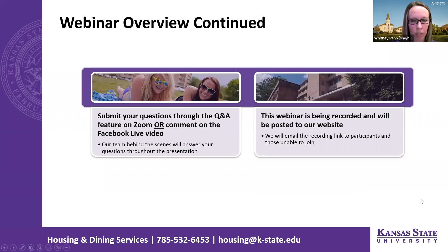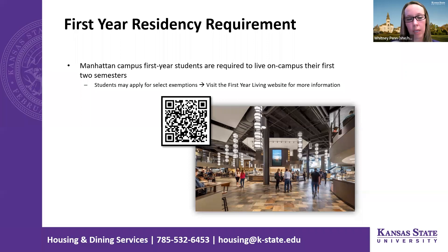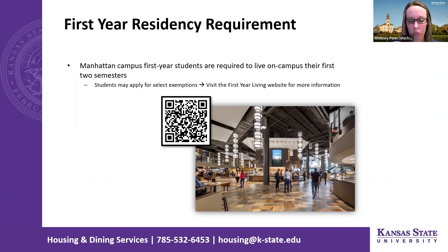The first-year residency requirement is relatively new for the Manhattan campus. All first-year students are required to live on campus for their first two semesters. There are select students who may apply for exemptions. If you want to look at those exemption categories, scan the QR code on this slide — that will take you to the first-year living website, which gives more information about exemption categories and required documentation. Our focus this evening is on room selection, so this probably won't apply to most of you.